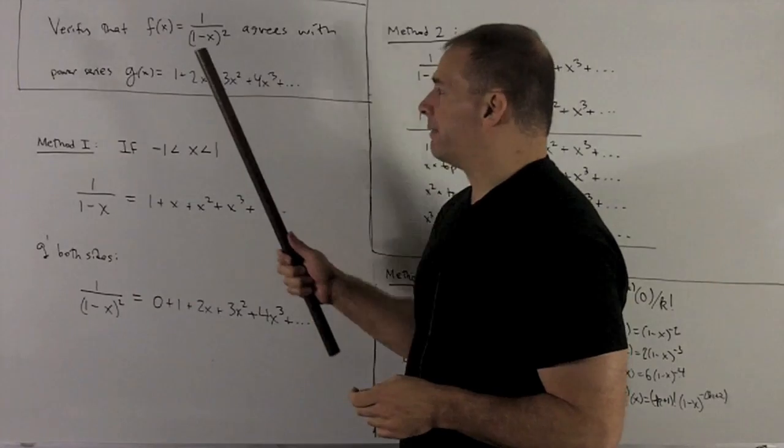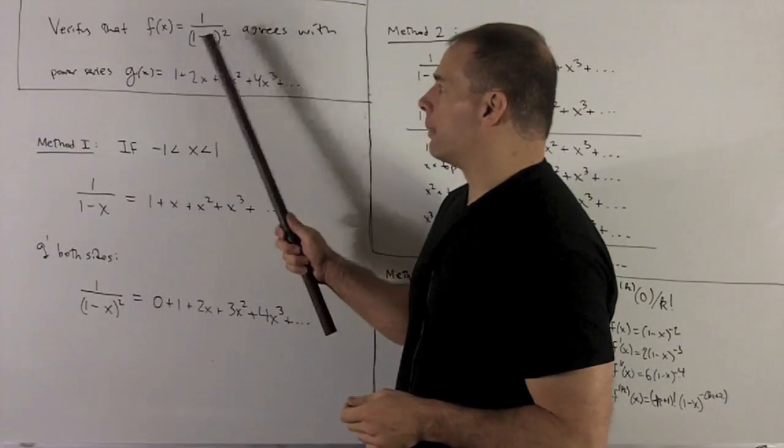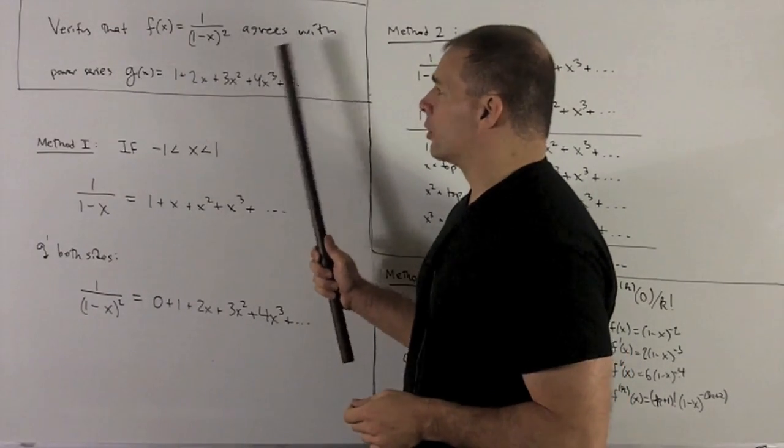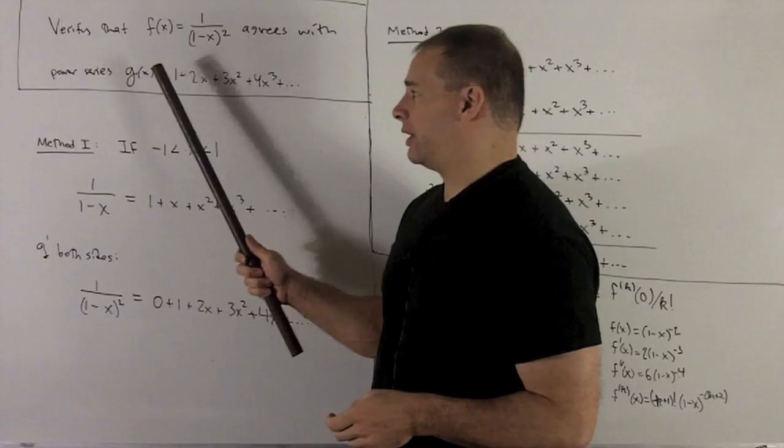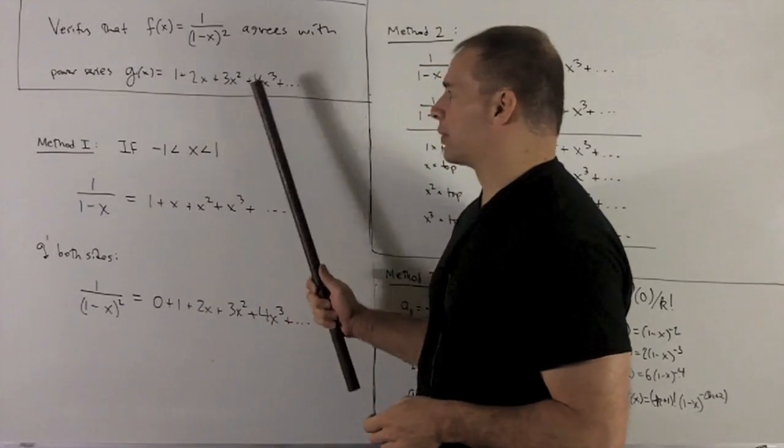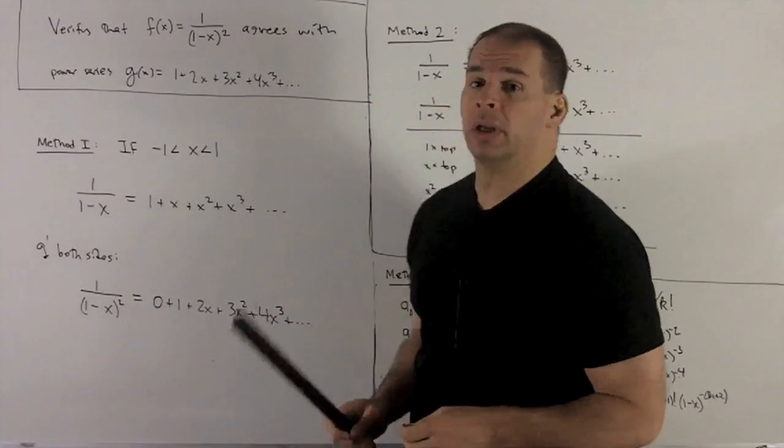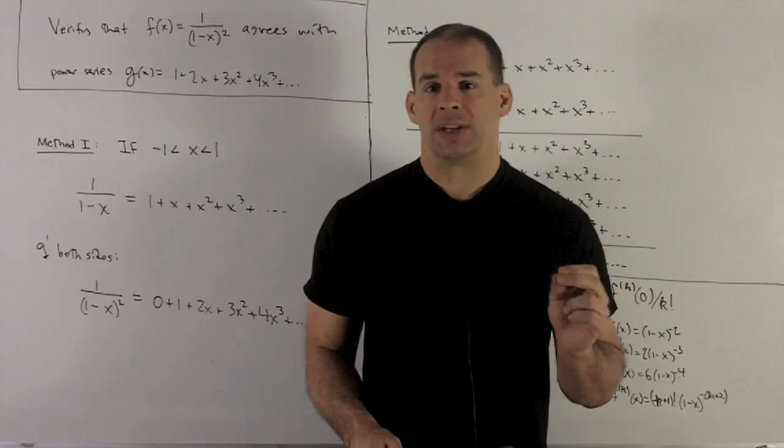So let's verify the function f(x) = 1/(1-x)² agrees with the power series g(x) = 1 + 2x + 3x² + 4x³ + ... on the interval from -1 to 1.